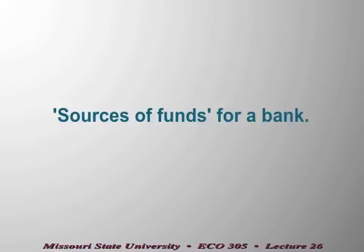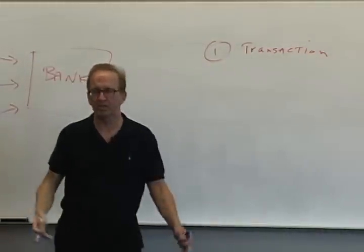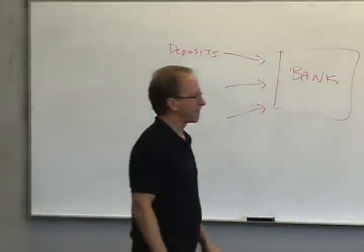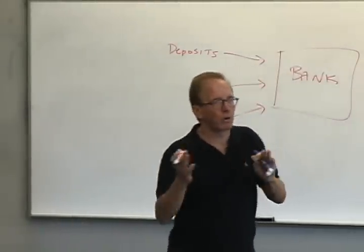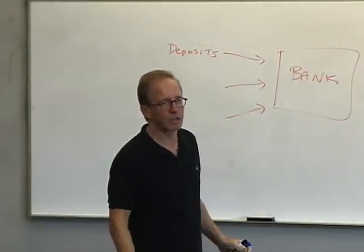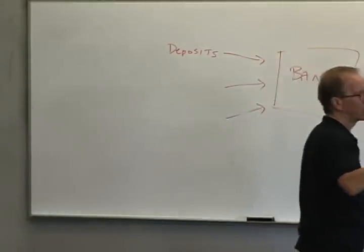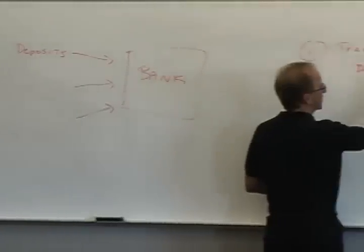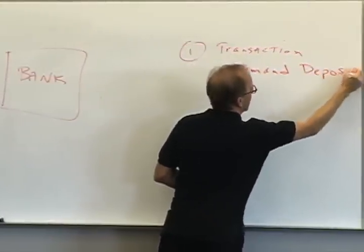We talked about transaction deposits. Transaction deposits are just a more generic term for checking deposits. These are deposits that once you put the money in the bank, you can go out and conduct transactions. You can do that by writing a check, using your debit card, or using an ATM card and getting cash. We talked about two types: demand deposit and a NOW account.